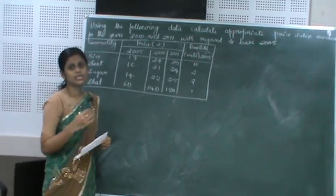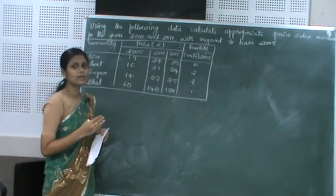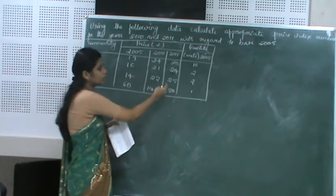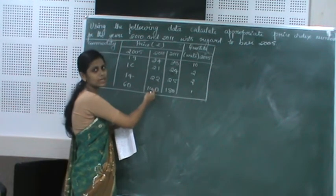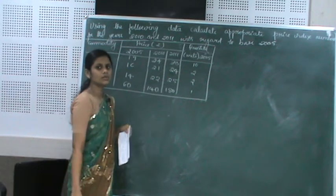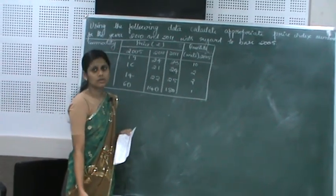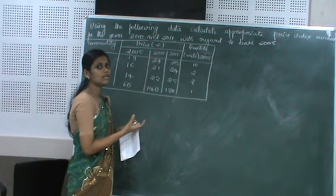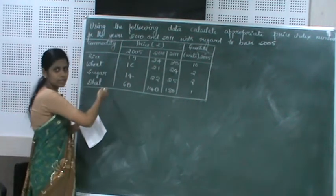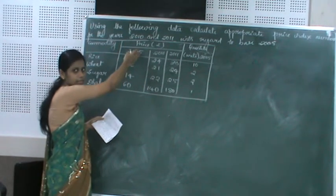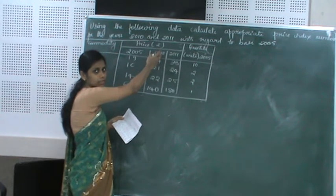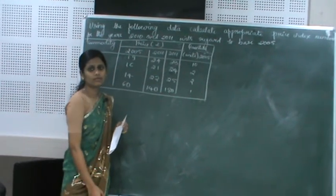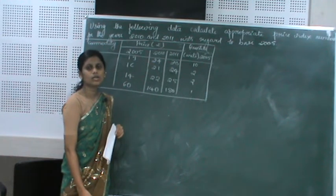They have not told you which price index number to construct — they have told you to calculate the appropriate price index number for 2010 and 2011. Both 2010 and 2011 are current years. So 2010 prices are taken as P1, 2011 prices as P2, and 2005 is the base year, so base year price is P0 and base year quantity is Q0.